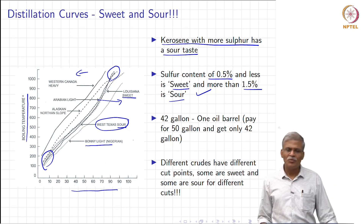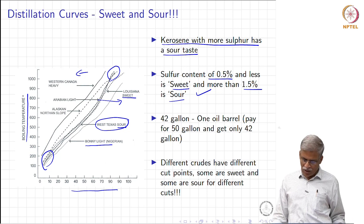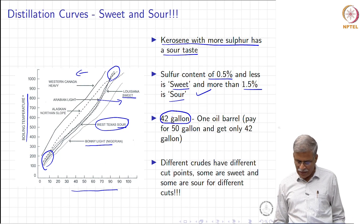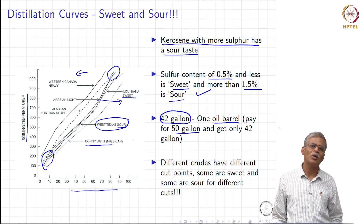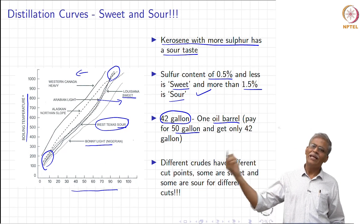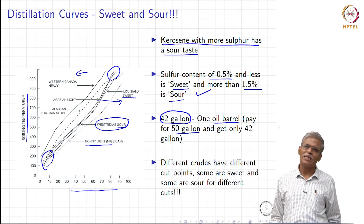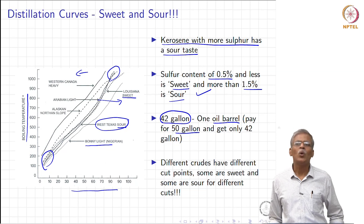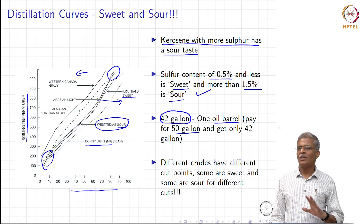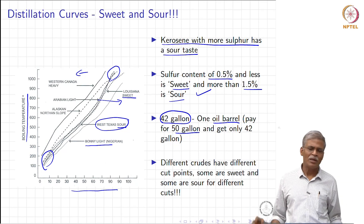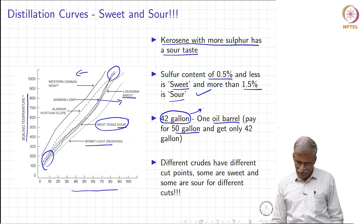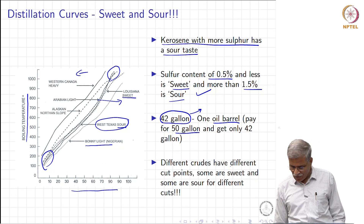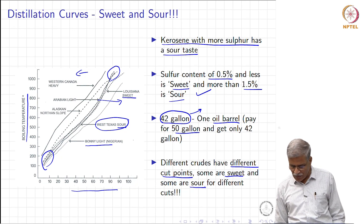We also need to understand the terminology related to barrel. 42 gallons is taken as one barrel. Originally it was 50 gallons, but when transported by horse-drawn vehicles there was a lot of spillover, and at the end they would get only 42 gallons. So 42 gallons was fixed as the unit volume of one barrel of crude oil. Nobody transports crude oil by horse-drawn vehicle today, but this terminology is still being used. Different crudes have different cut points — some sweet and some sour for different cuts.